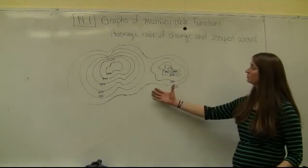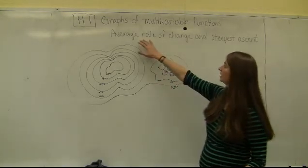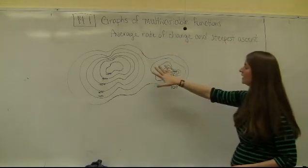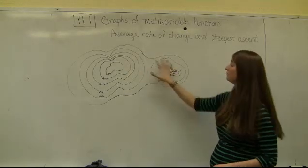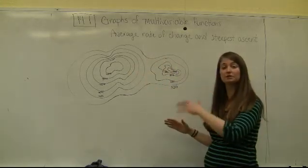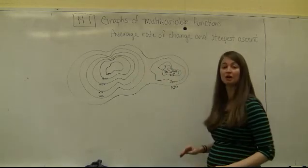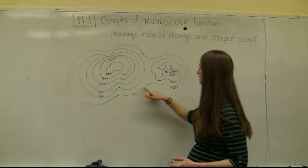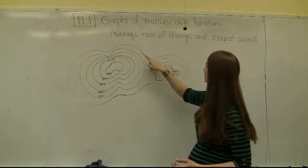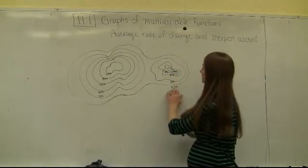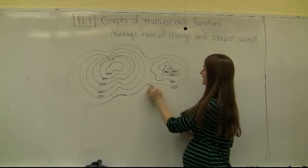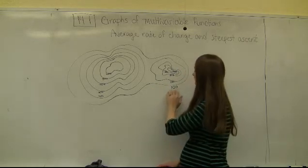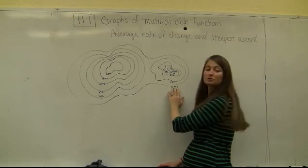Next we're going to use contour plots to calculate average rate of change and the path of steepest ascent. This contour plot is a representation of some three-dimensional surface flattened onto the chalkboard. Each of these contour lines has a number attached to them — the outermost line has a value of 100, meaning our height or z-value is exactly 100 along that curve.